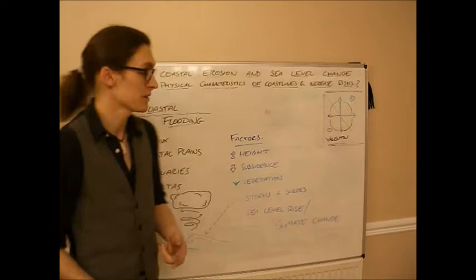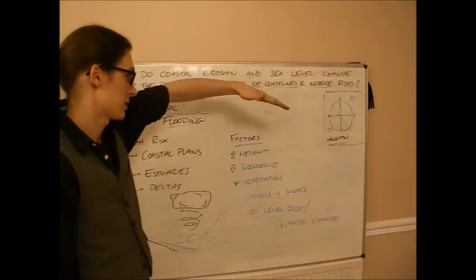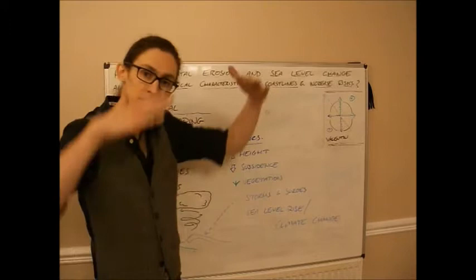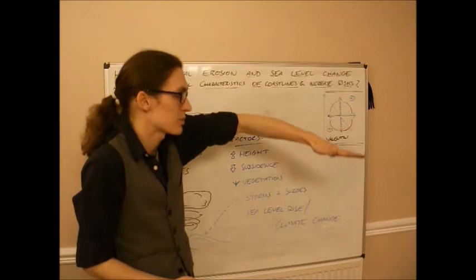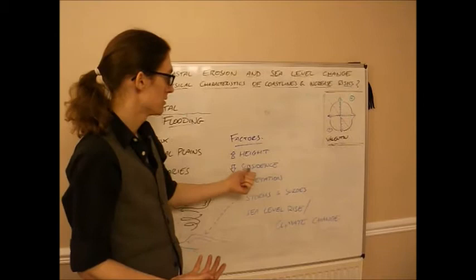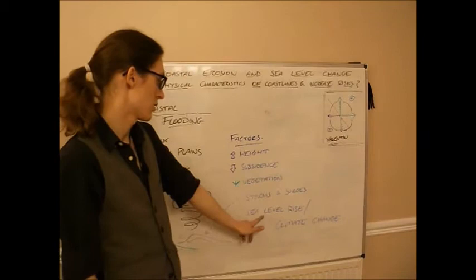The factors that affect coastal flooding are height of the land. Higher it is, less chance of coastal flooding. Makes sense. Subsidence. Has the land sunk down? So height is the natural height of the land. But there's also, has the land subsided because of isostatic sea level change? Maybe it's subsided because of eustatic sea level change. Sea level rising up. Which we'll come back to.